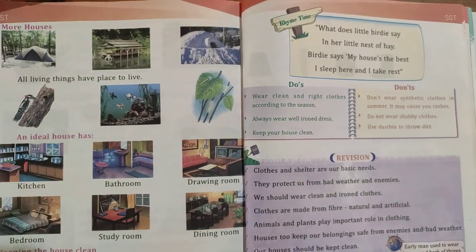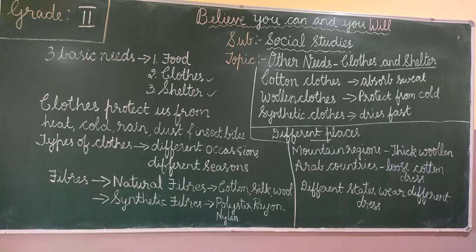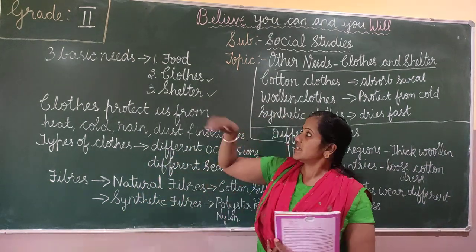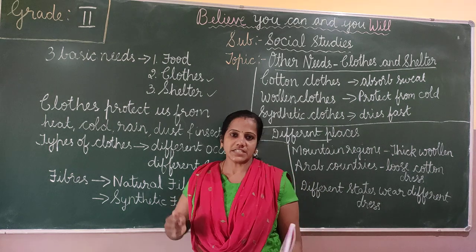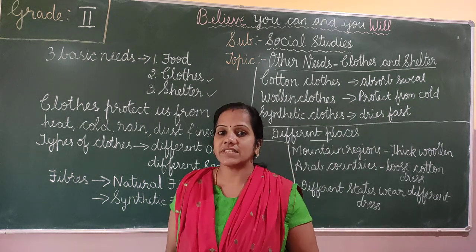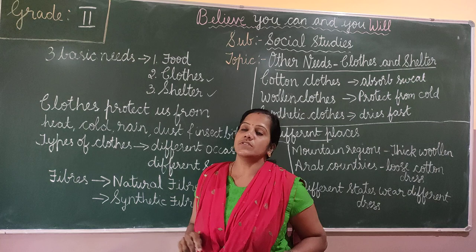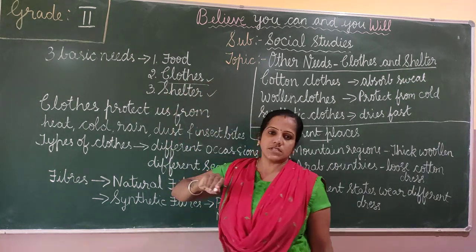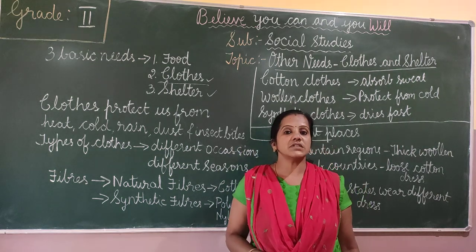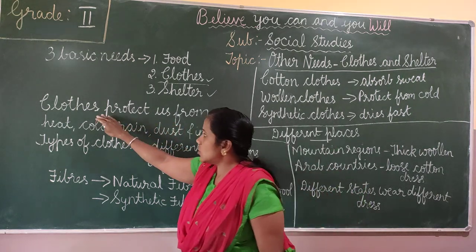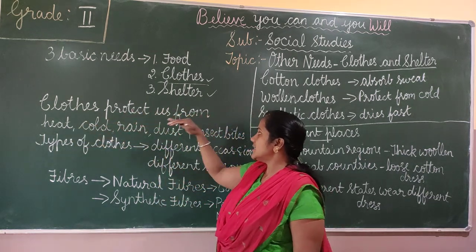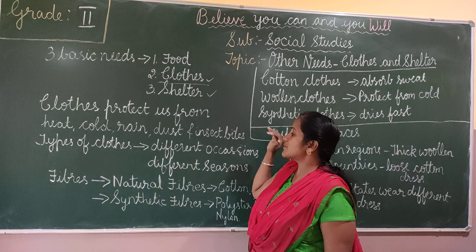Now we will come to the explanation part. So children, the three important basic needs are food, clothes and shelter. In the previous class we learnt about food, so now first we will go to clothes. Clothes are important for us — they protect us from heat, cold, rain, dust, and even insect bites.